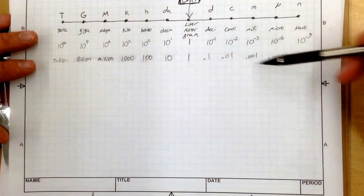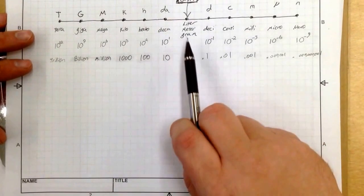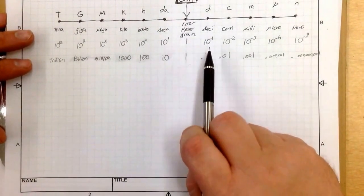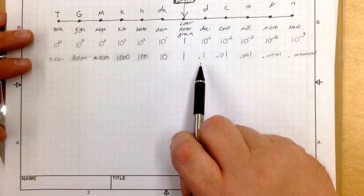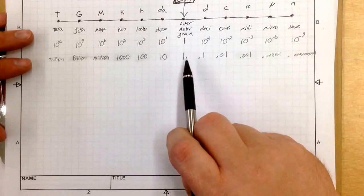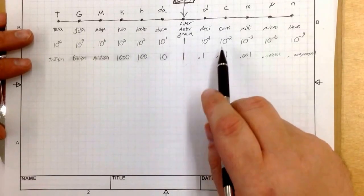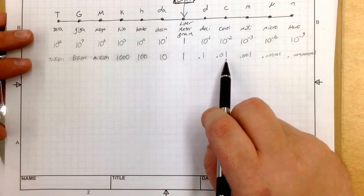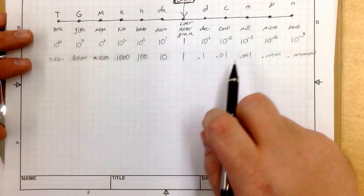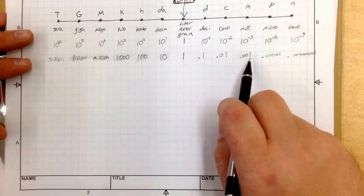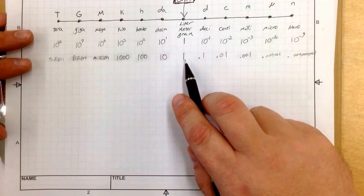Now it also goes the other way. It gets smaller too. So if we have our base unit, meter, we have a decimeter, which is 0.1 length of a meter. We have centimeter, which is 0.01 the length of a meter. We have a millimeter, which is 0.001 length of a meter.